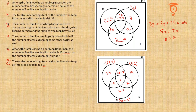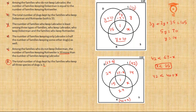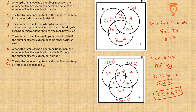Now applying point C: the number of families keeping Labrador is least among the three types. First, 42 < 67−x implies x < 25, so maximum x = 24. Second, 42 < 40+x implies x > 2, so minimum x = 3. Therefore x ranges from 3 to 24 inclusive, and for all such values Labrador remains the least among the three species.